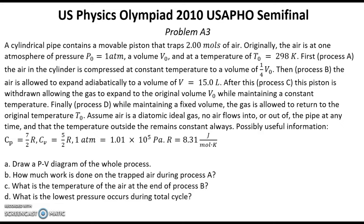Assume air is a diatomic ideal gas. No air flows into or out of the pipe at any time, and the temperature outside remains constant always. Possibly useful information: CP equals 7/2 R, CV equals 5/2 R, 1 atmosphere equals 1.01 × 10^5 Pascal, R equals 8.31 joules per mole Kelvin.